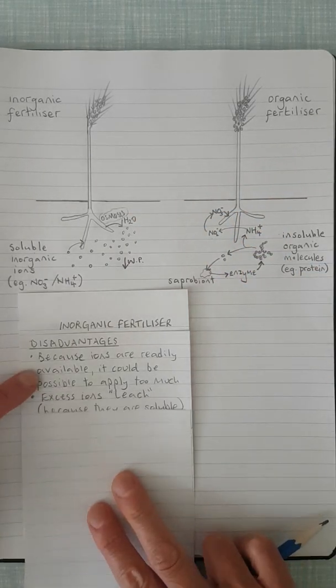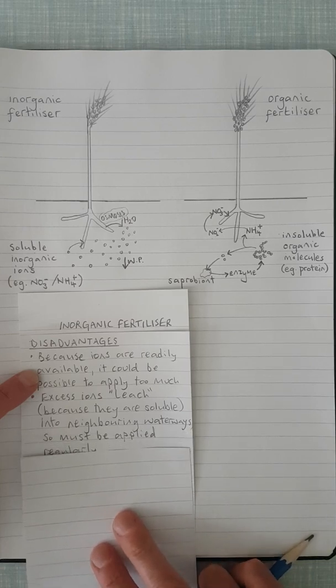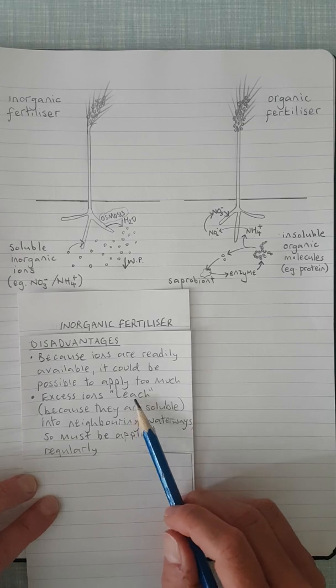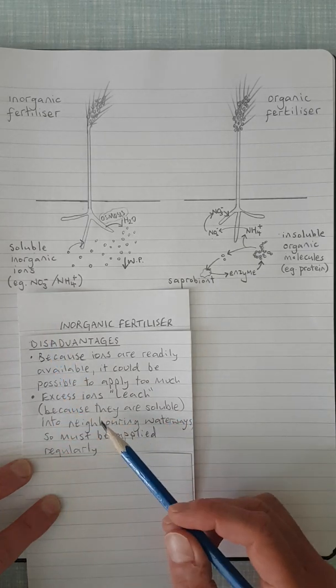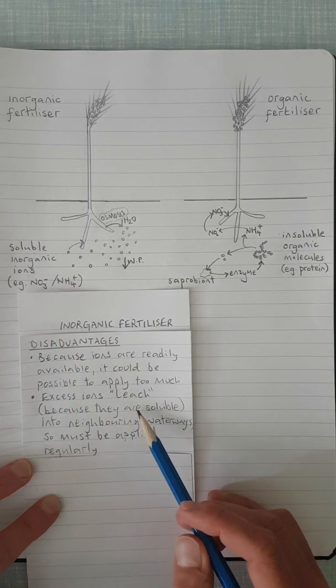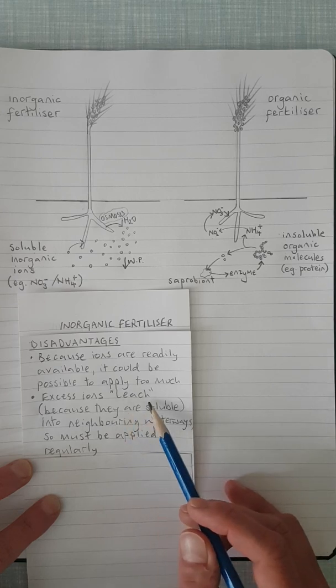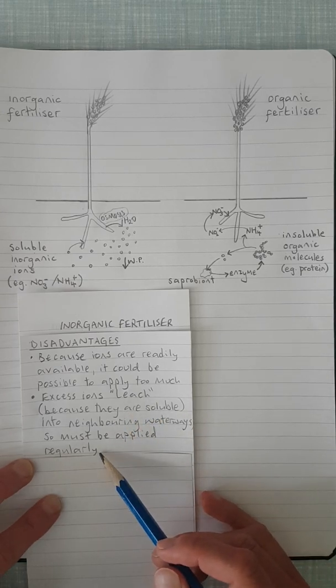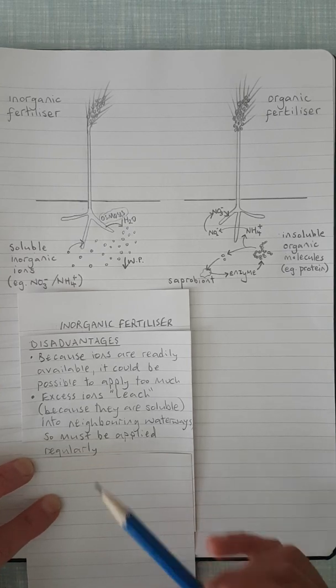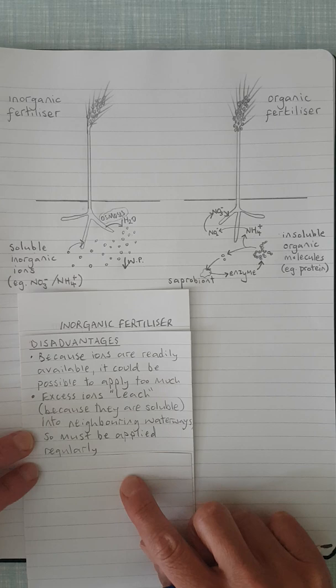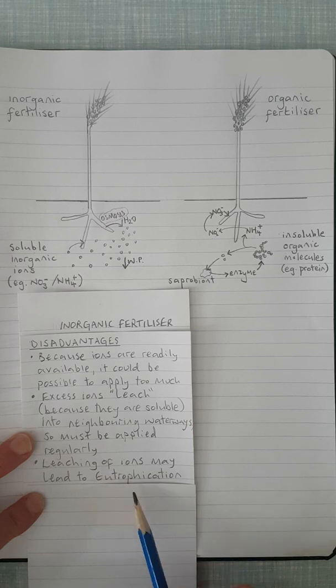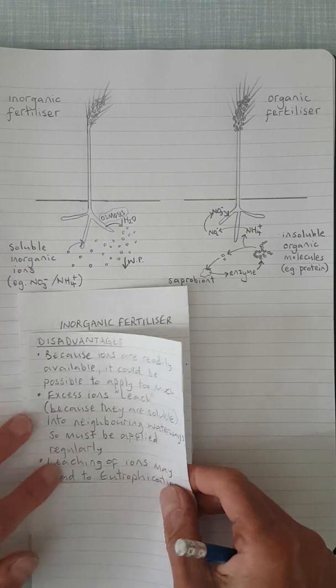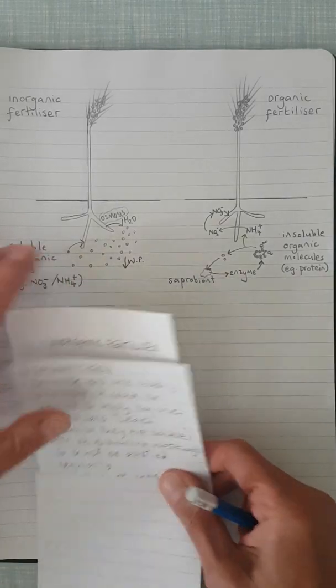Let's move on to the next disadvantage. Excess ions could leach because they are soluble. Leaching is a word that describes the inorganic ions dissolving and running off with the water into neighboring waterways. So if they're leaching away, the fertilizer must have to be reapplied regularly. And this leads to the next disadvantage which you might have heard of from GCSE. The leaching of ions may lead to a process called eutrophication, which I'm going to describe over the page.